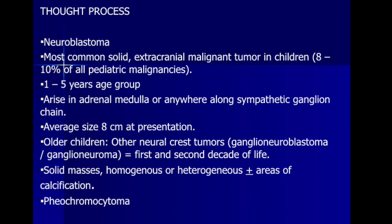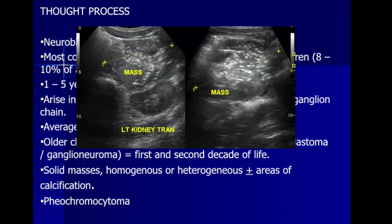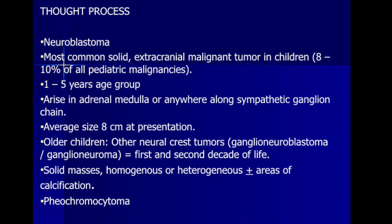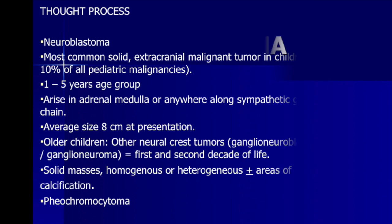Pheochromocytoma is another differential diagnosis to keep in mind. In this particular case it turned out to be a ganglioneuroma, which fit rather well with the fact that it was an older child — a 14-year-old boy — who had presented incidentally with that mass.